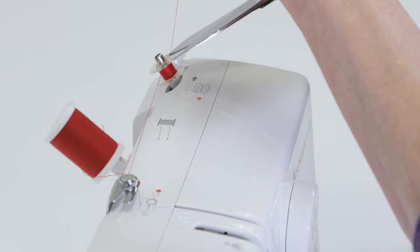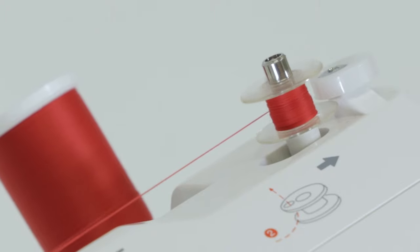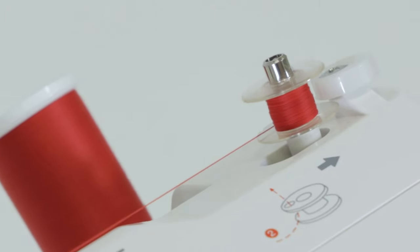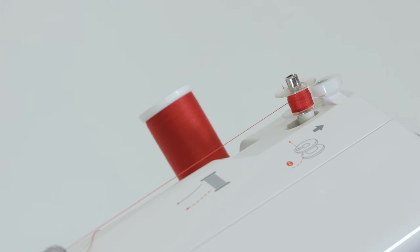You can stop to trim the thread tail close to the bobbin, and you can continue winding until you have as much thread on your bobbin as you want. But if you want it full, just continue winding. It will stop automatically.